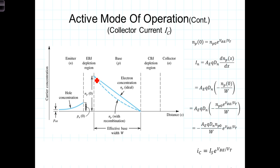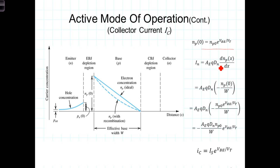The electron concentration at the base-emitter junction, N_P0, is exponentially related to the base-to-emitter voltage — effectively the exponential relationship at the PN junction, where N_P0 is the thermal equilibrium electron concentration in the base. The electron current is then proportional to the change in electron concentration as a function of x across the width of the base. The proportionality constants include A_E, the cross-sectional area of the base-emitter junction; Q, the charge constant; and D_N, the electron diffusivity in the base.